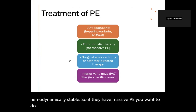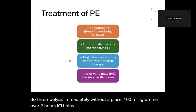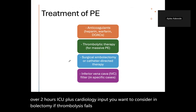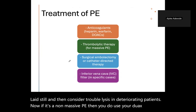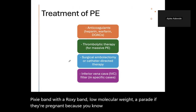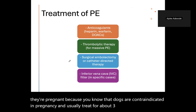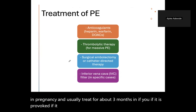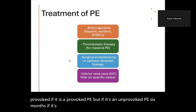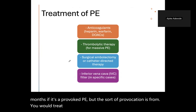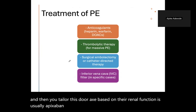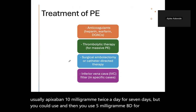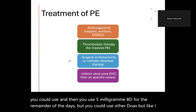Consider embolectomy if thrombolysis fails. For submassive PE, anticoagulate and consider thrombolysis in deteriorating patients. For non-massive PE, use DOACs — apixaban or rivaroxaban — or low molecular weight heparin. In pregnancy, DOACs are contraindicated — use LMWH. Treat for three months if provoked, six months if unprovoked. If provoked by cancer, treat with DOACs for three to six months, tailored to renal function. Apixaban is typically 10mg twice daily for seven days, then 5mg twice daily.